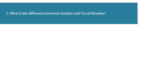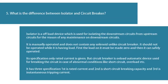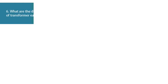Question 5: What is the difference between an isolator and a circuit breaker? An isolator is an off-load device used for isolating downstream circuits from upstream circuits for the purpose of maintenance. It is manually operated and does not contain any solenoid unlike a circuit breaker. It should not be operated while under load — the load must first be made zero, then it can be safely operated. Its specification only includes rated current. A circuit breaker, however, is an on-load automatic device used for breaking the circuit in abnormal conditions like short circuit or overload. It has three specifications: rated current, short circuit breaking capacity, and instantaneous tripping current.